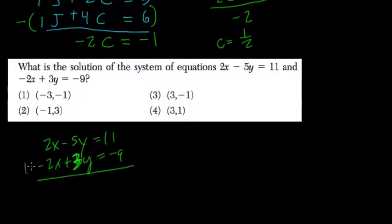Since these are opposites, we're going to add them. We want to cancel out. These cancel out. Negative 5 plus 3Y is 2Y. 11 plus negative 9 is 2.